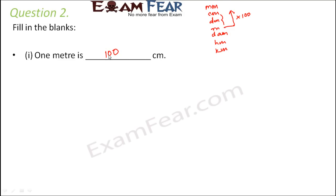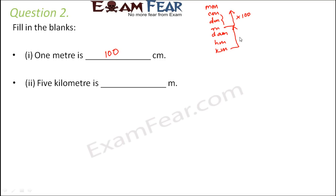Question two continued: five kilometers is how many meters? One kilometer — going from kilometer to meter is bottom to top, so we multiply. There are three steps, giving three zeros, so one kilometer equals 1000 meters. Therefore, five kilometers equals five into 1000, which is 5000 meters.